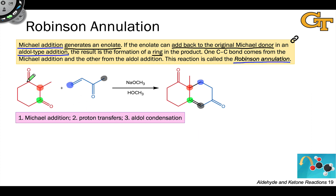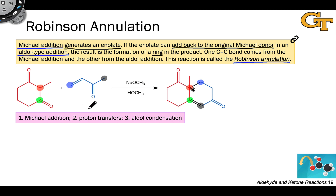Either of the two carbonyl groups could react, but these groups are enantiotopic in the intermediate after Michael addition, so it doesn't matter which one we use. The reaction does typically establish a stereocenter — this carbon between the two carbonyl groups in the beta-diketone — but unless we have a chiral catalyst or some chiral substrate involved, we'll generally get a racemic mixture.